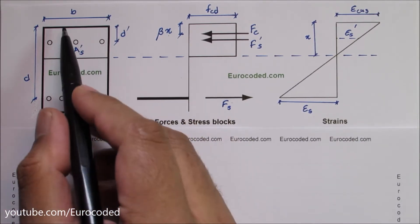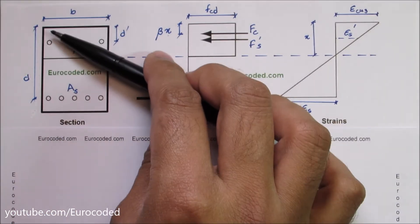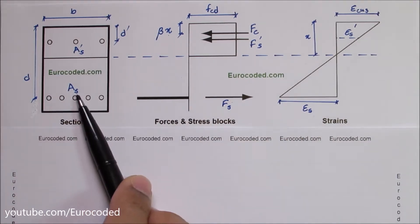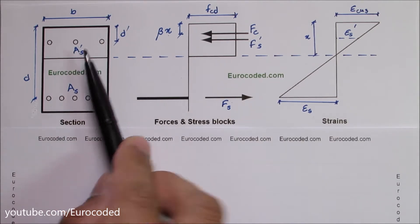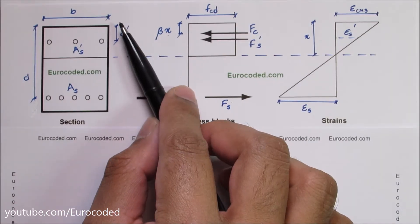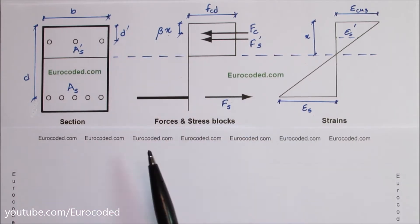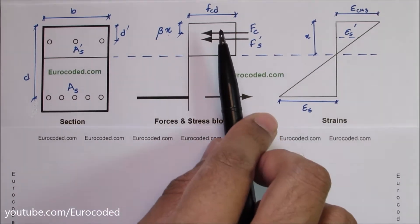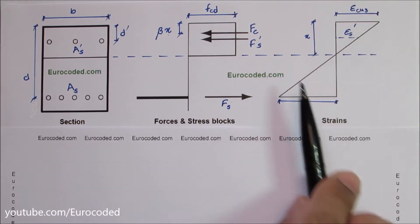Here we have our section. The section breadth is B and the effective depth is D. The bottom reinforcement is AS and the top reinforcement is A'S, with the depth to the top reinforcement being D'. Then we have our forces and stress blocks, and the strain diagram.